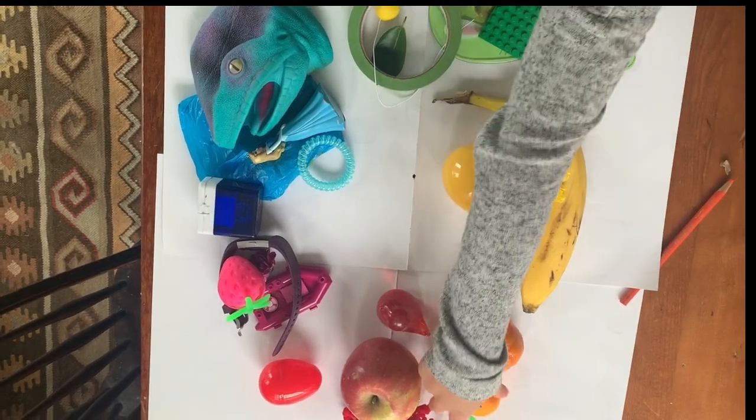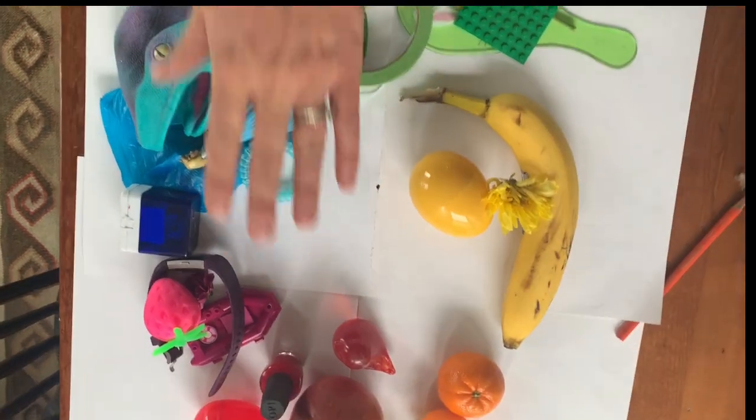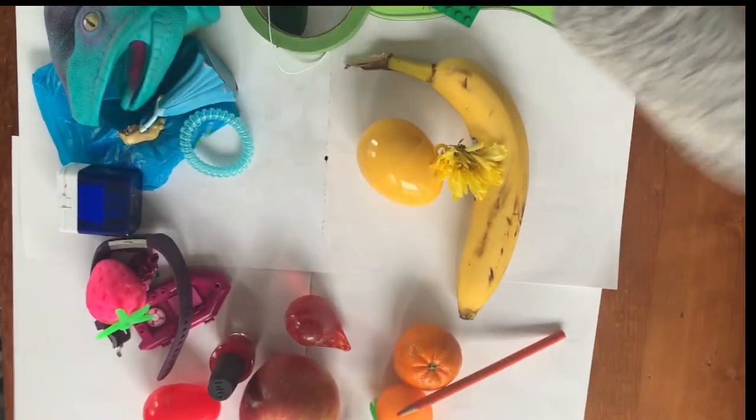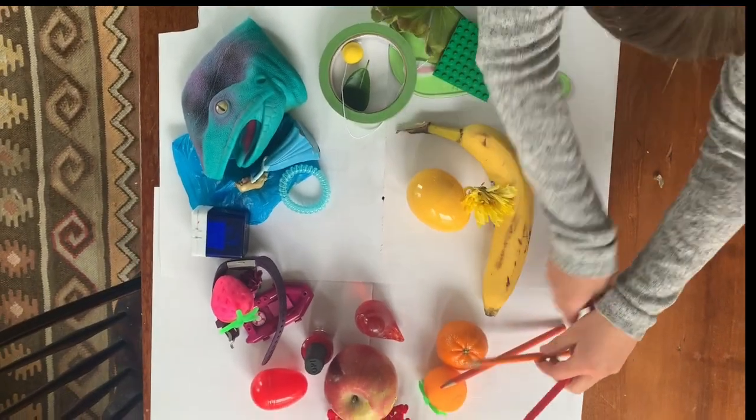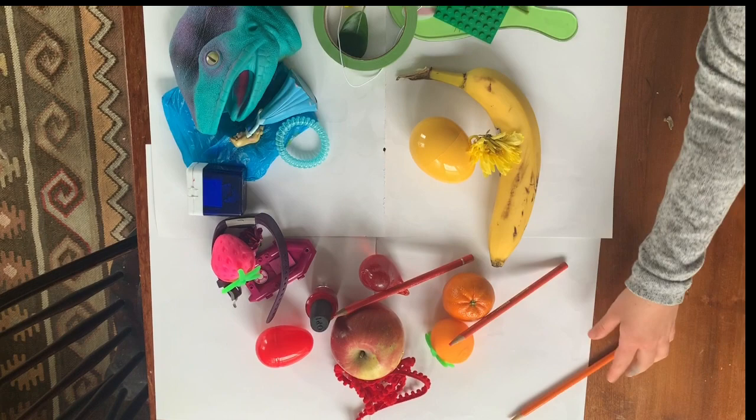You're sorting things and you're making your own color wheel. So you see we have red and purple and blue and green and yellow and orange. Make sure you take a photograph when you're done and send it to me. Thanks!